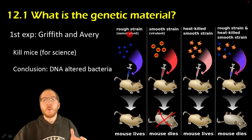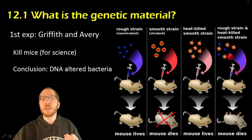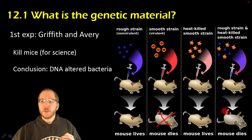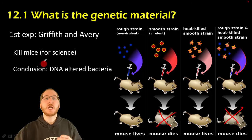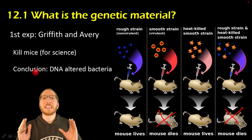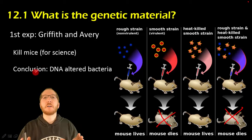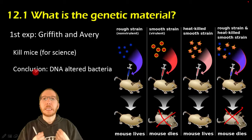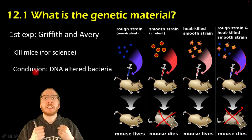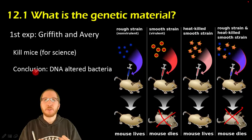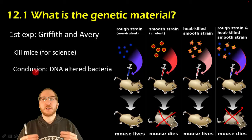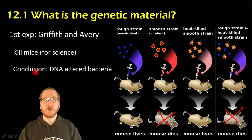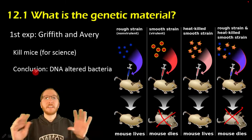By doing this, he didn't quite know what would happen, but he found that the bacteria did become the smooth strain — it became lethal and killed the mouse. This seemed to imply something he called transformation: the idea that bacteria can grab genetic material from their environment and use it. The rough bacteria that lacked the capsule were able to grab genetic material that allowed them to build that capsule, become the lethal smooth strain, and kill the mouse.